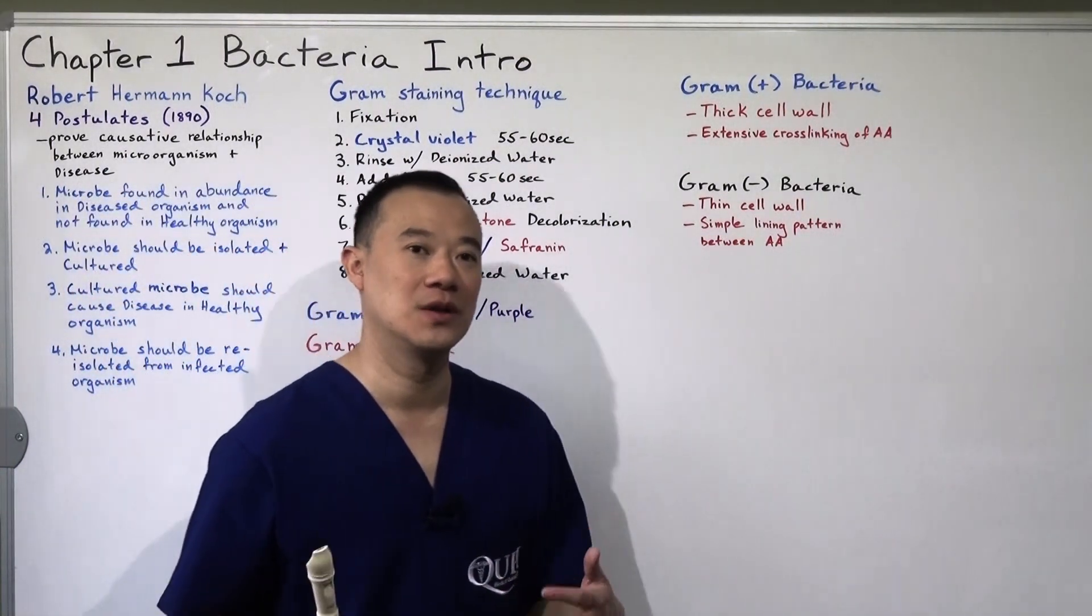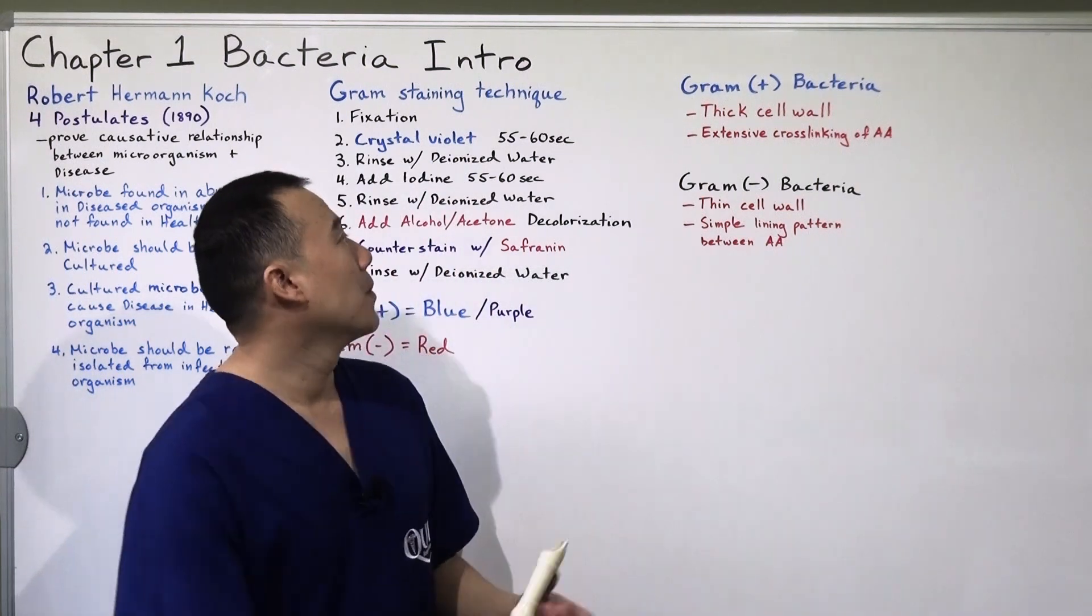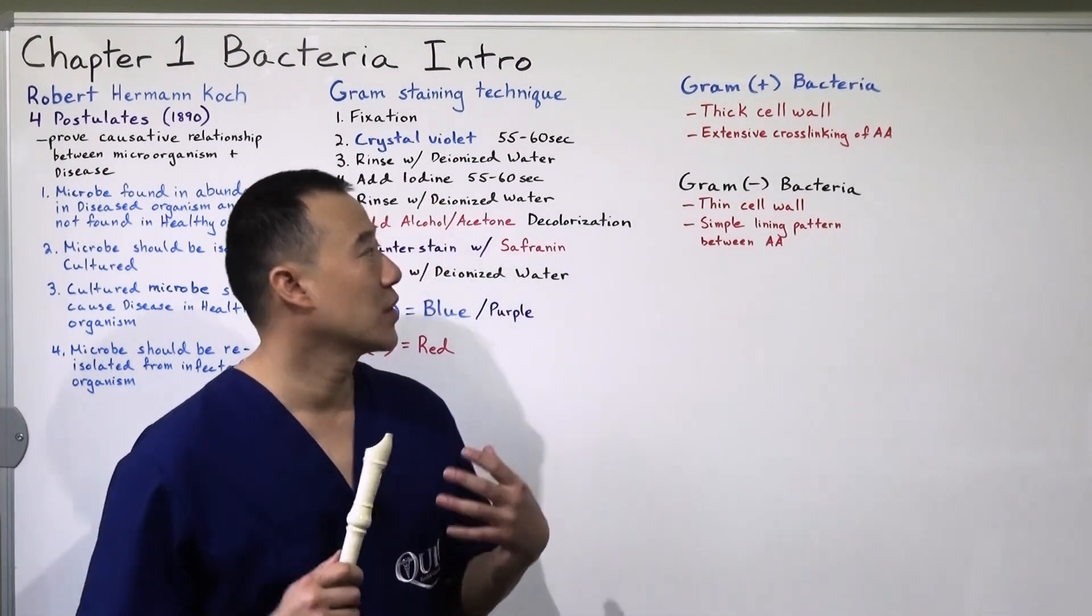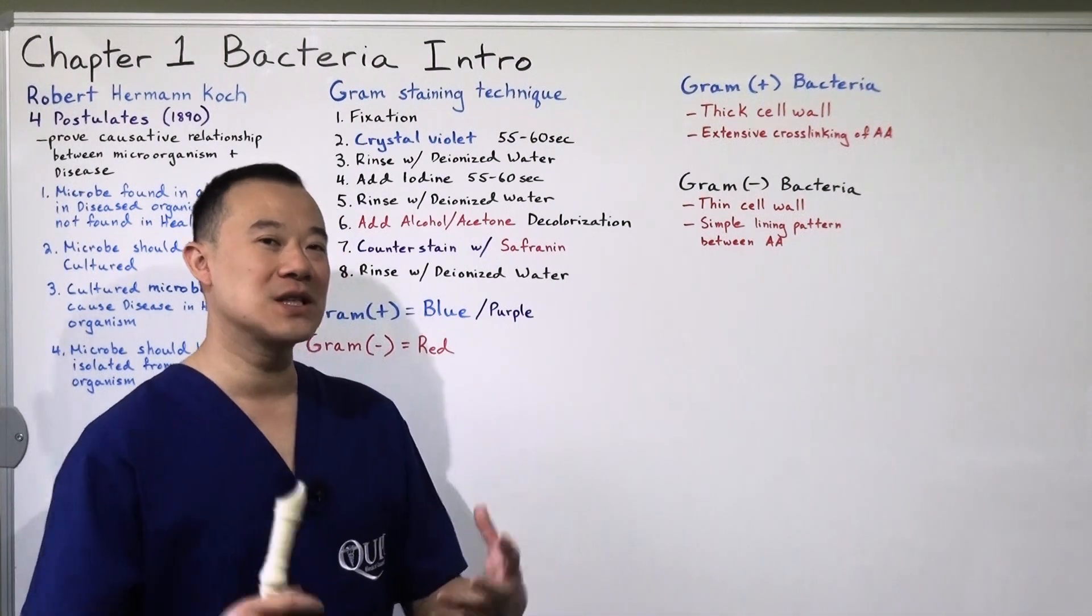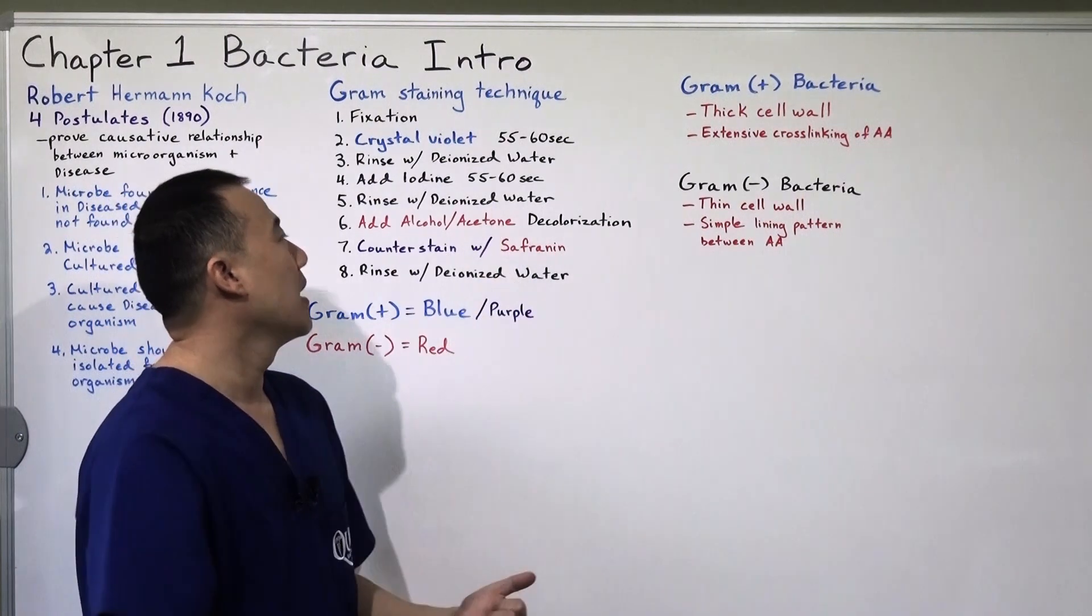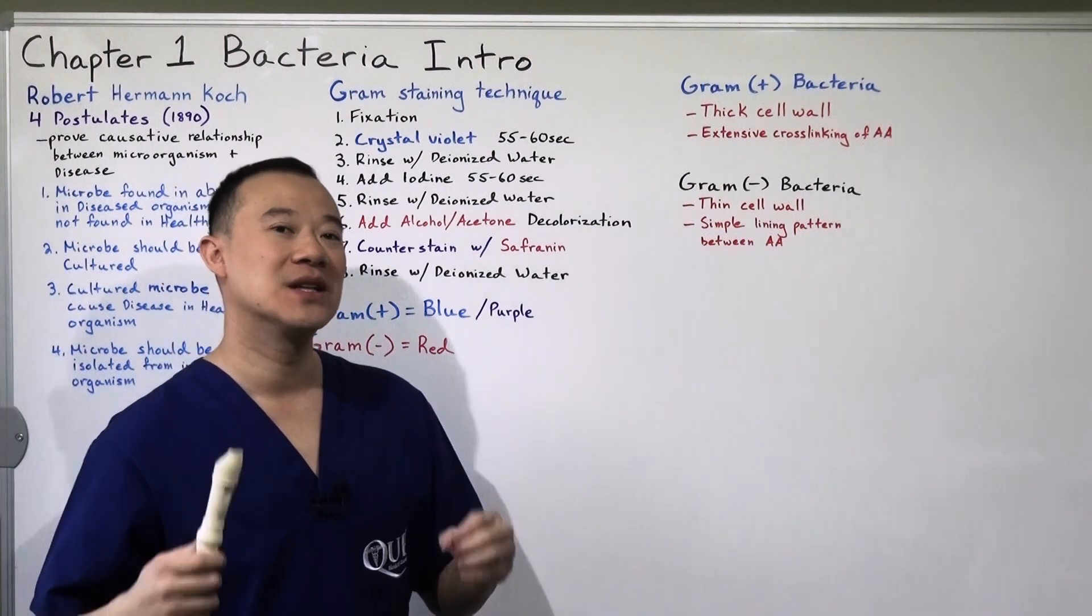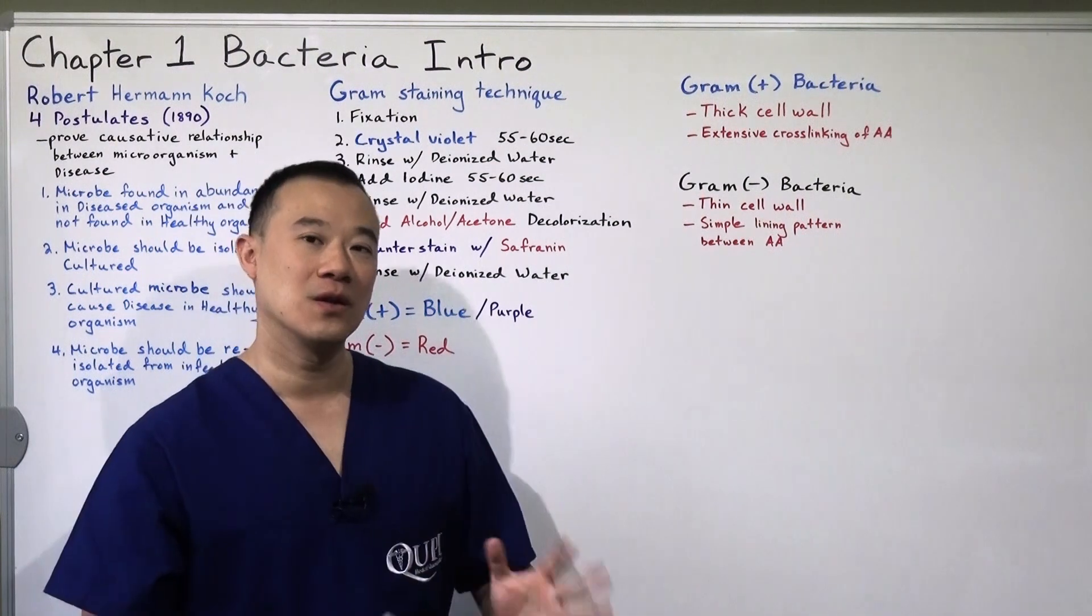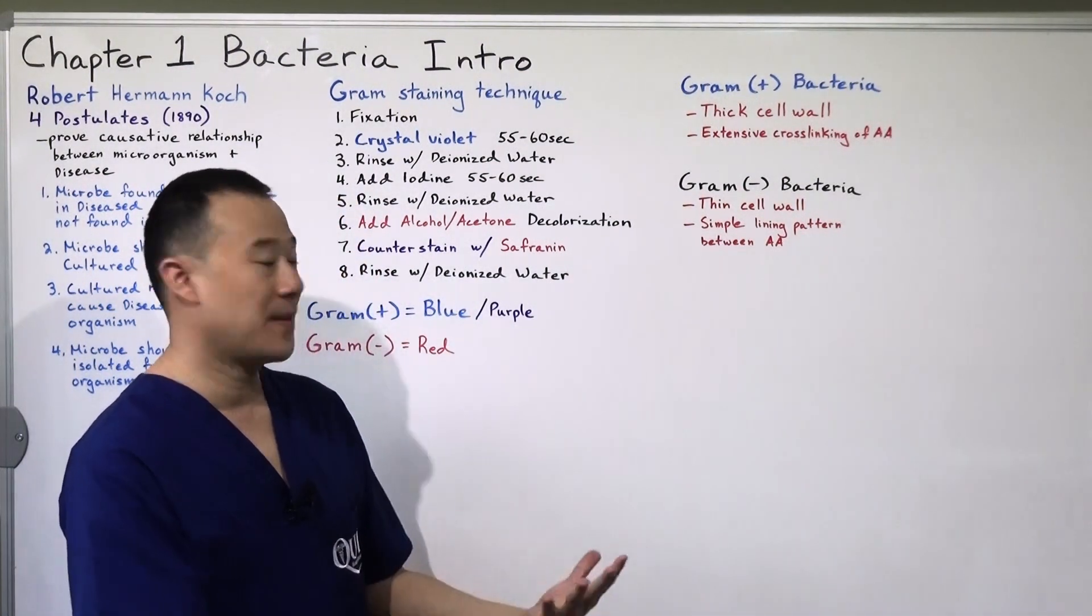Now, why do we know the difference that there's two different types of bacteria based off of gram staining? Well, gram-positive bacteria has a thick cell wall with a lot of extensive cross-linkings of the amino acids. The extensive cross-linking of amino acids and this thick cell wall absorbs the crystal violet and all the processes afterwards, especially the decolorization, the alkaline acid, does not remove the color. And if it does not remove the crystal violet color from the bacteria, it shows up as blue and purple.